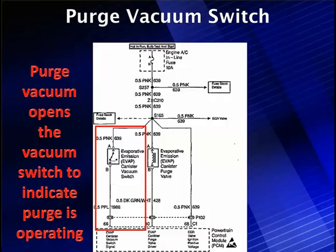Here are the specifics on our canister purge vacuum switch. The top of the canister vacuum switch is connected to pin A, which goes up to B+, to the AC fuse. The bottom goes to the PCM. What this indicates — looking at a diagram like this — is that B+ is going to be hot in run, bulb test, or start. So in every condition except engine off, we're going to have B+ on pin A. Pin B is going to be used by the computer on pin 66 to energize it. It's a ground-enabled, low-side driver.